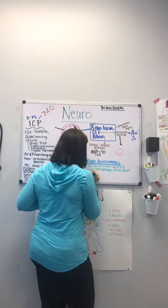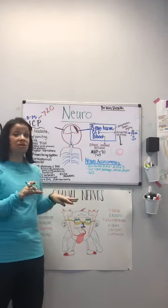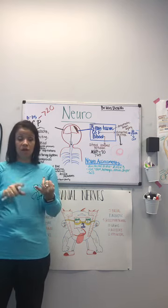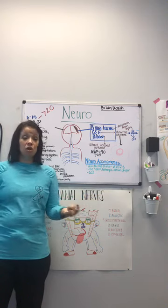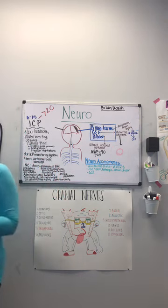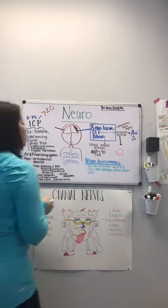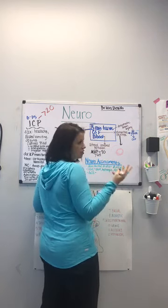The next thing is the Glasgow Coma Scale — a quick and easy way to assess neurological status. The possible scores range from 3 to 15. It tests the patient on three components: eye opening response, motor response, and verbal response. Each component has a minimum score of one, so the bottom total score is three and the highest is fifteen. The lower the number, the worse the patient is neurologically.